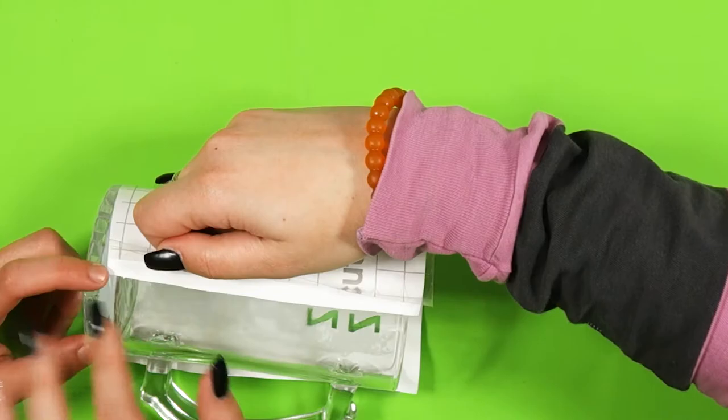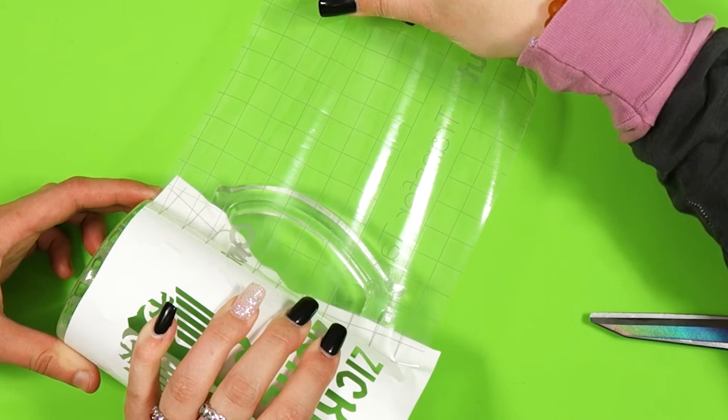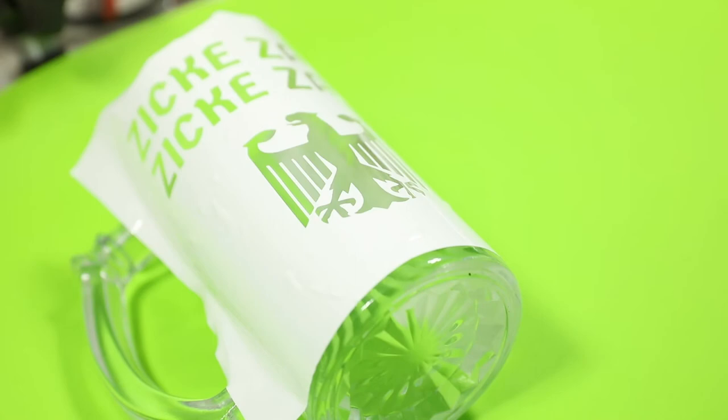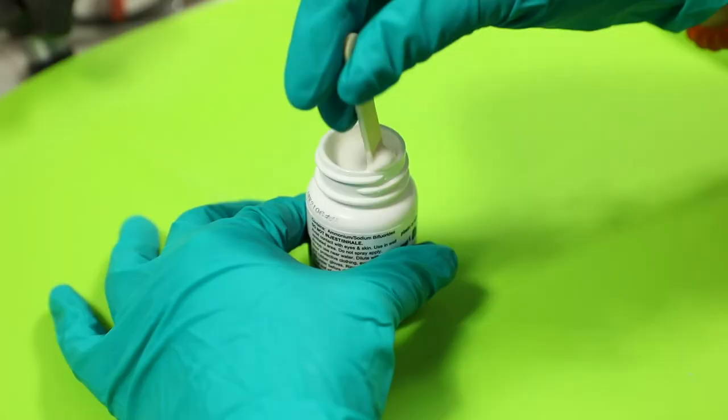Next, we'll be applying the Armor Etch Etching Cream to the stencil. For the best results, make sure that you're in a well-ventilated room that's about 70 degrees Fahrenheit. Before handling the etching cream, be sure to wear plastic gloves because the cream can really irritate your skin. To mix the etching cream thoroughly, use a popsicle stick to stir it.